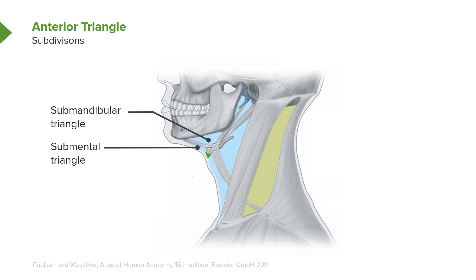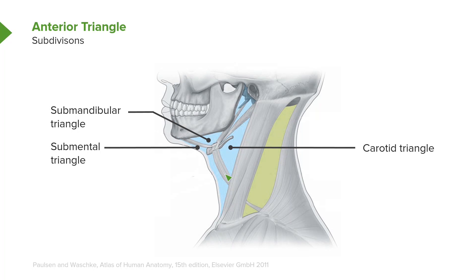Just inferior to the anterior belly of the digastric muscle is a small triangle called the submental triangle. Its inferior boundary is at the level of the hyoid bone, and another boundary is the midline of this region. The third subdivision of the anterior triangle is the carotid triangle, where we can see the stylohyoid muscle and the anterior belly of the omohyoid, as well as the sternocleidomastoid, forming its boundaries.